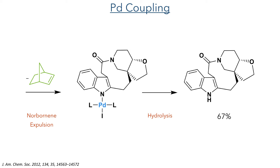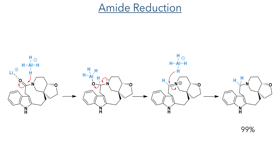Taking this macrocycle forward, they then reduced the amide using lithium aluminium hydride. Addition of one hydride to the amide group produces an aluminium-coordinated hemiaminal intermediate. Expulsion of the oxygen produces an iminium ion, which is then reduced by another equivalent of hydride to produce the target amine in 99% yield.